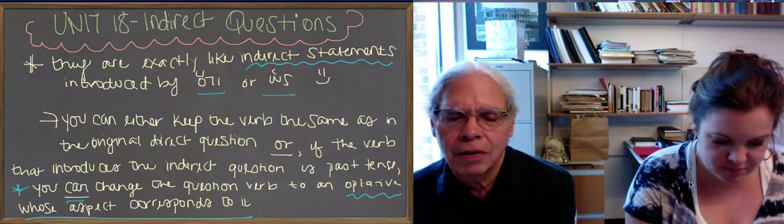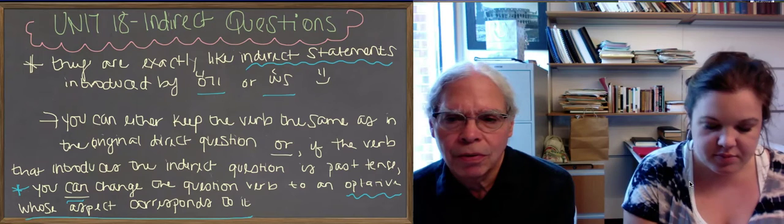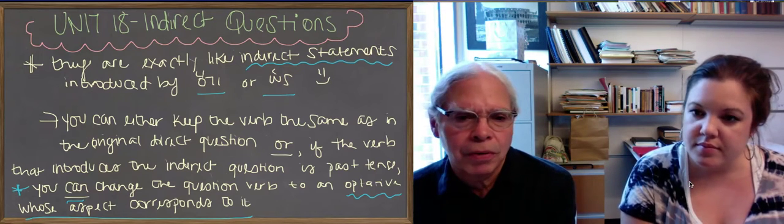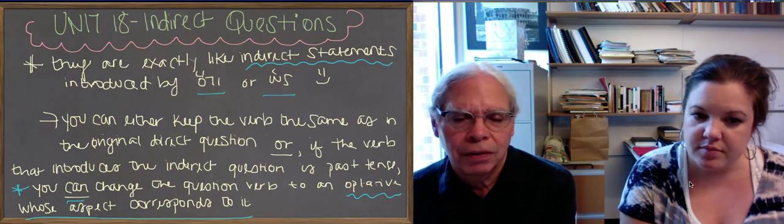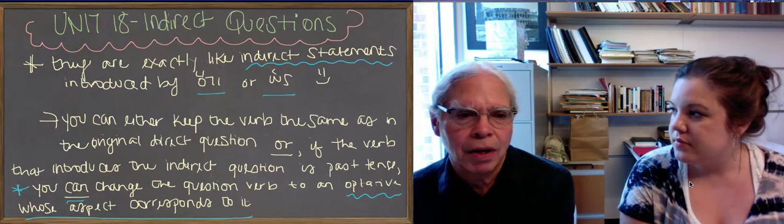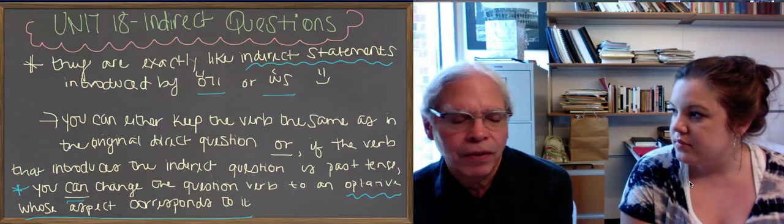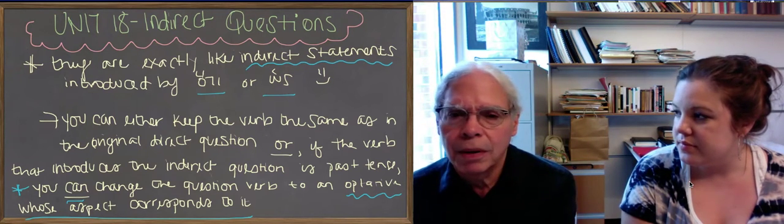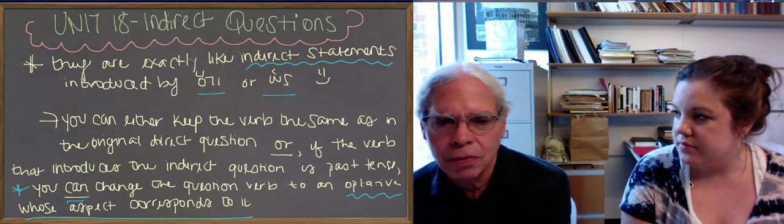So 'how are you feeling today' is going to be imperfective aspect. I'm going to use the regular so-called present optative. If the question was 'I asked you how you felt yesterday,' that would be aorist, then you're going to use the aorist optative.